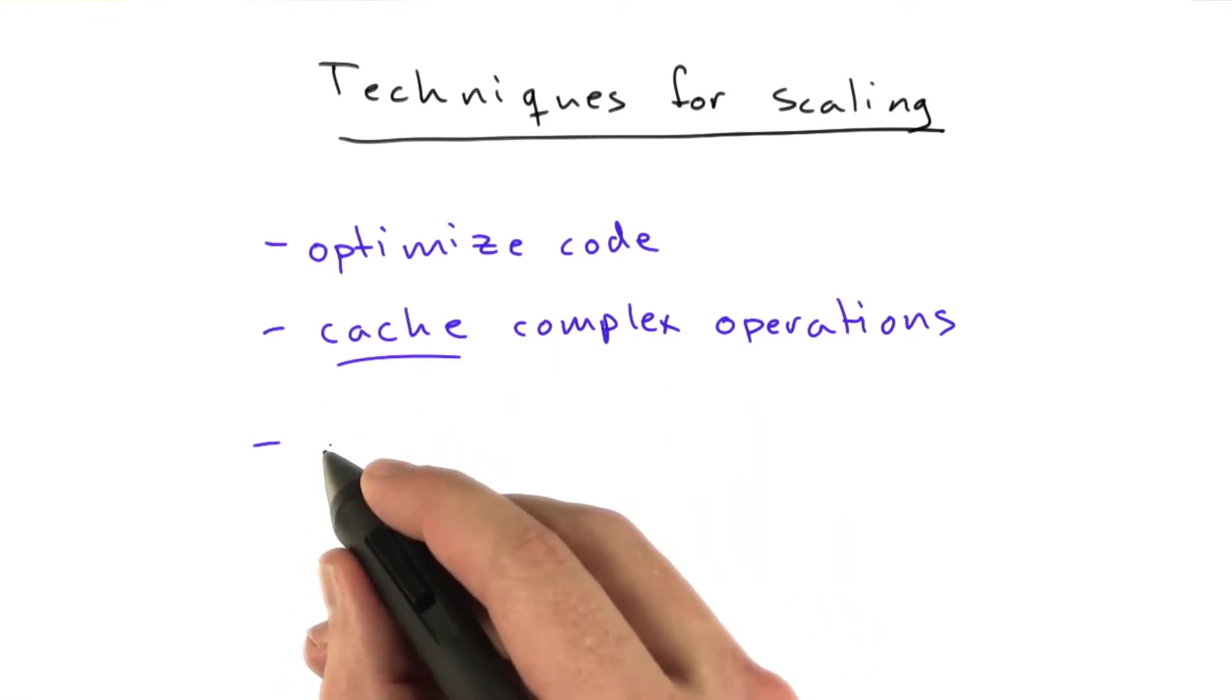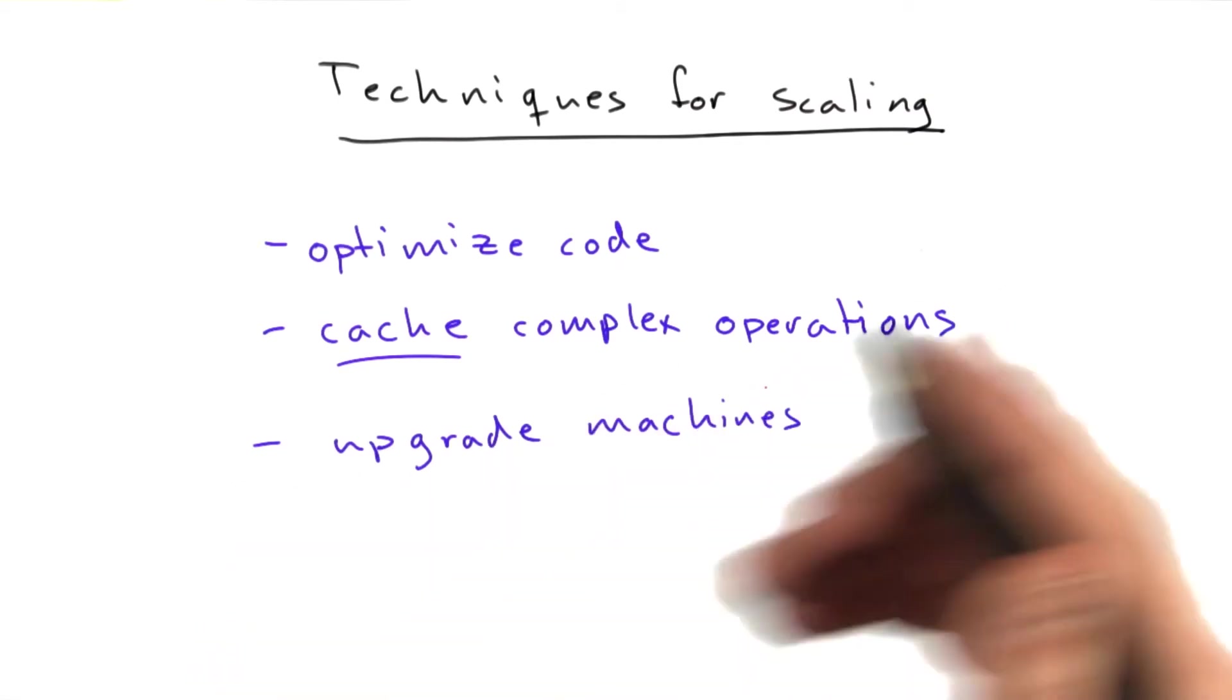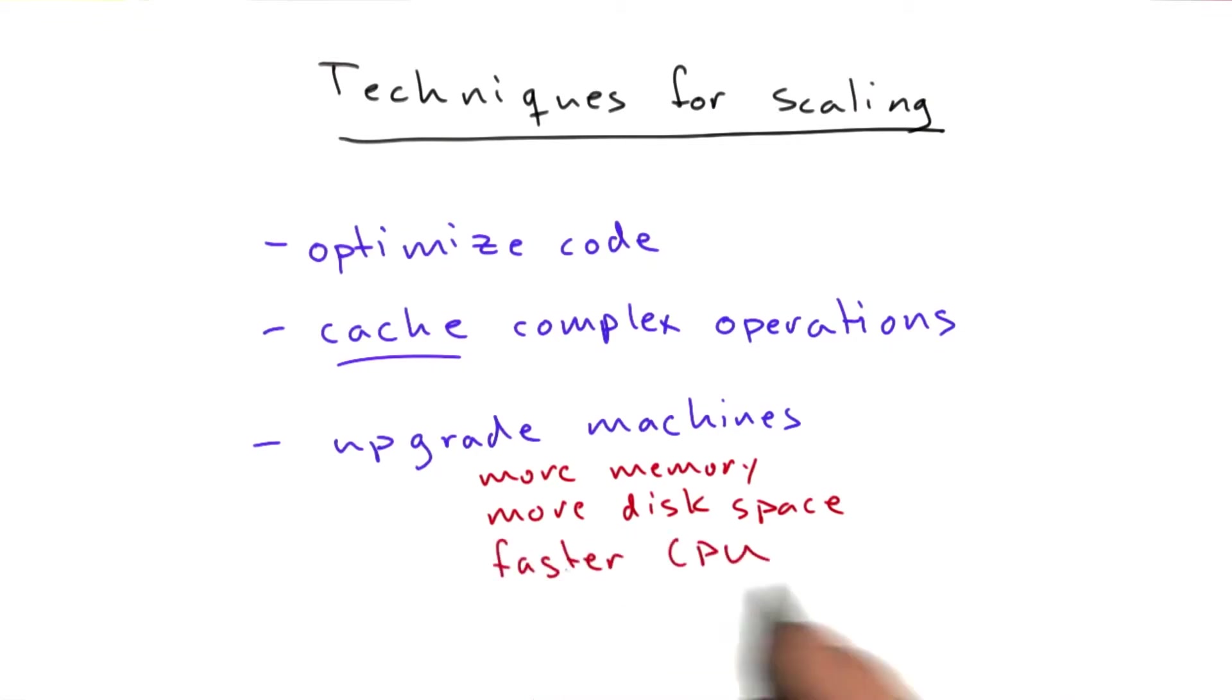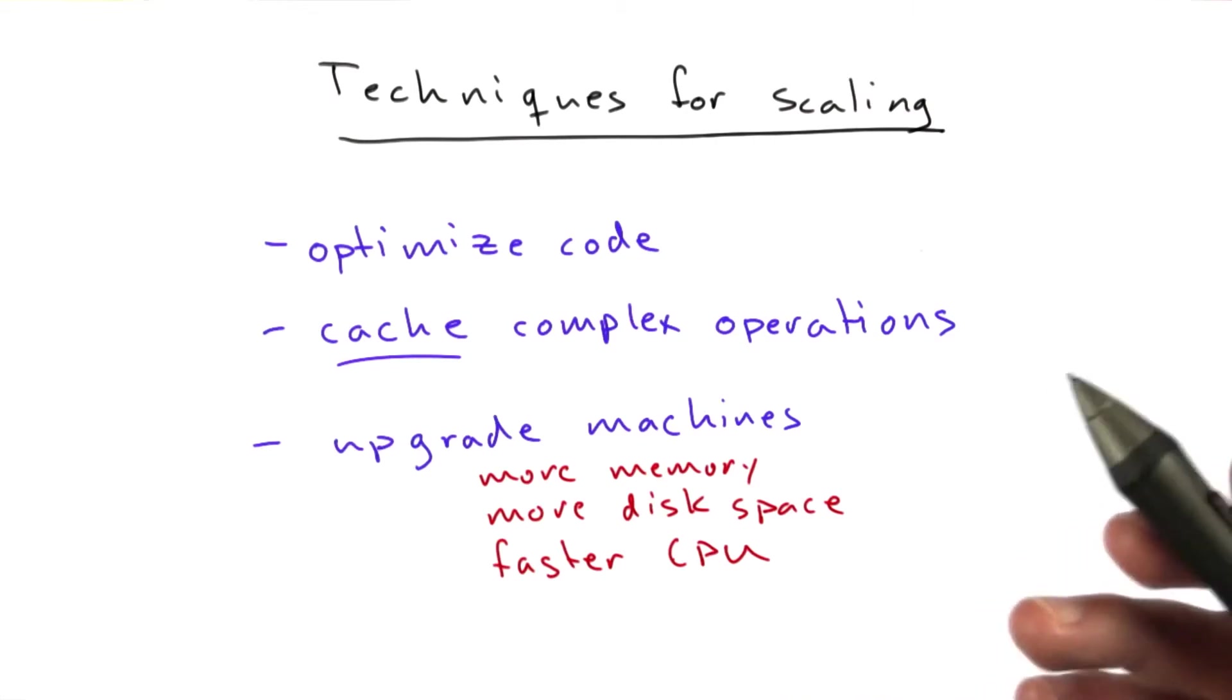You can upgrade your machines, which basically means replacing the machines you're using now with machines that have more memory, more disk space, faster CPU. This is often a good option.